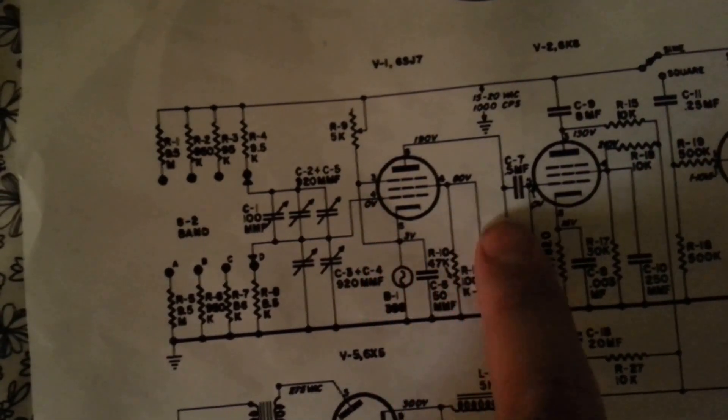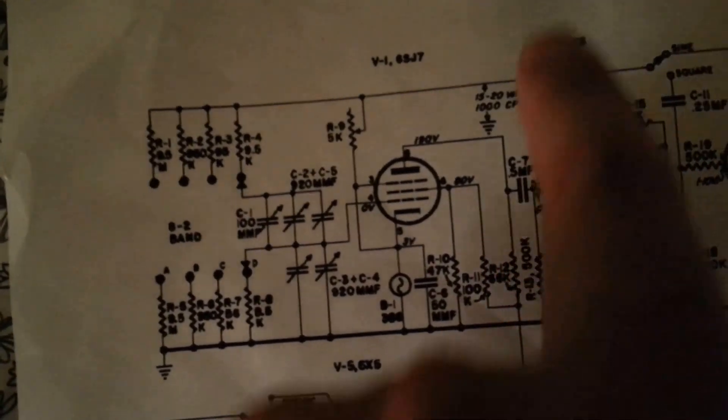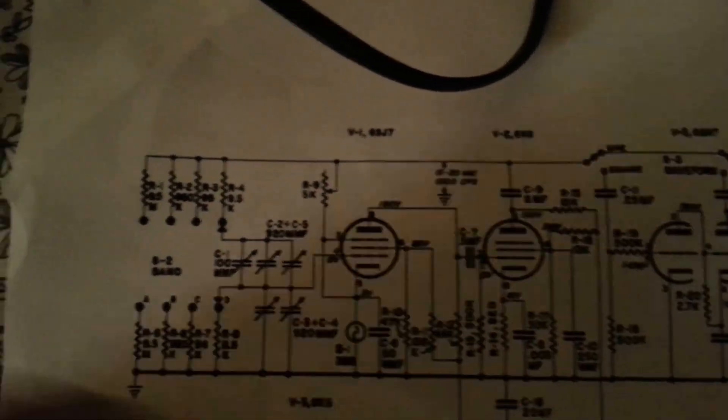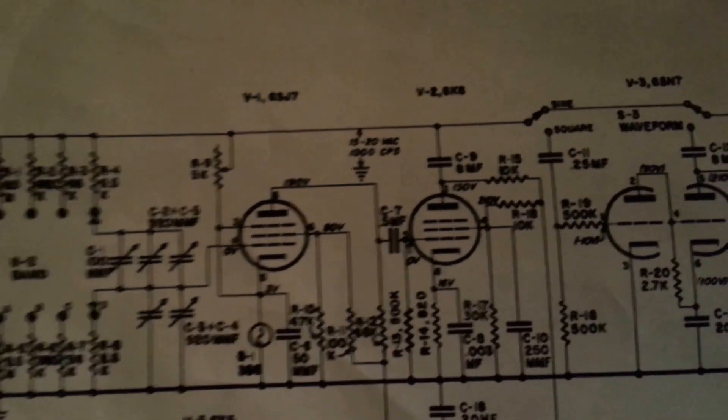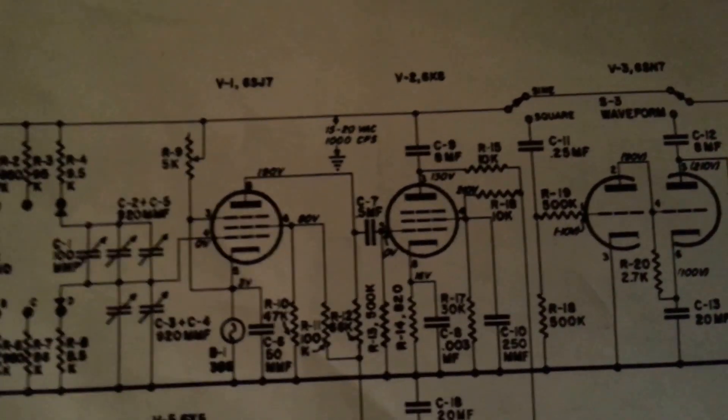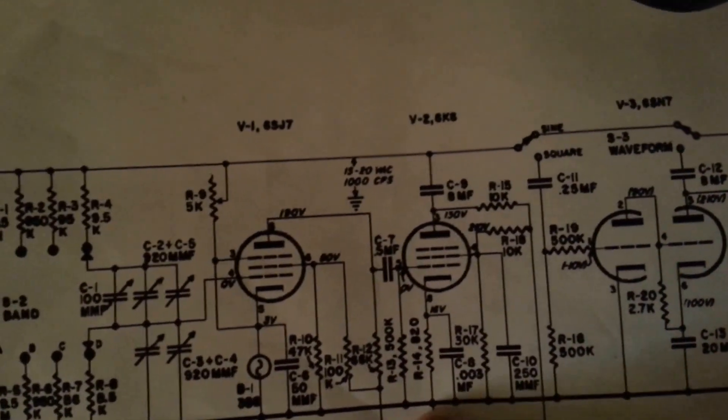Right here is your first stage. Coupled through this capacitor we go into the pre-amplifier which is a 6K6. I think that's actually a 6J6 in there right now, but it calls for a 6K6.